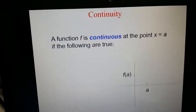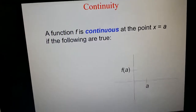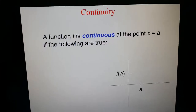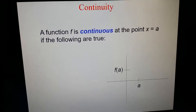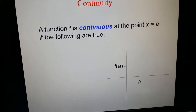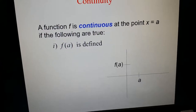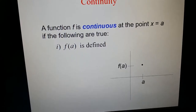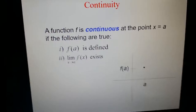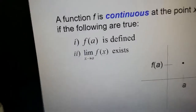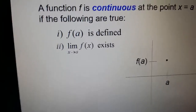On the topic of continuity, first I want to explain the different definitions. A function f is continuous — meaning it's a continuation of flow with no gap — at a point x equals a if the following are true: first, f(a) is defined; second, the limit as x approaches a of f(x) exists.